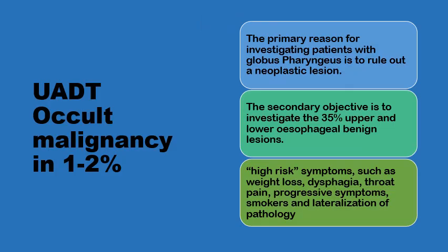There have been very few reports linking upper aerodigestive tract malignancy and globus sensation, including one by the presenter, which showed that if you trace back patients who ultimately developed pharyngeal carcinoma, 1–2% of these patients had manifested with globus sensation well before being diagnosed with pharyngeal cancer. This remains one of the primary reasons for investigating patients with globus — to rule out possible malignancy.